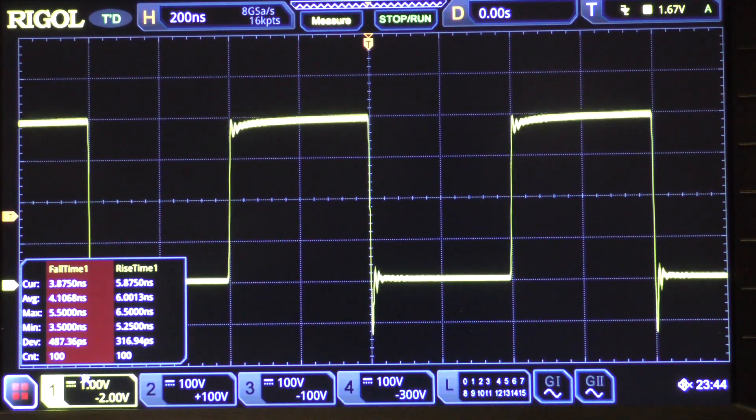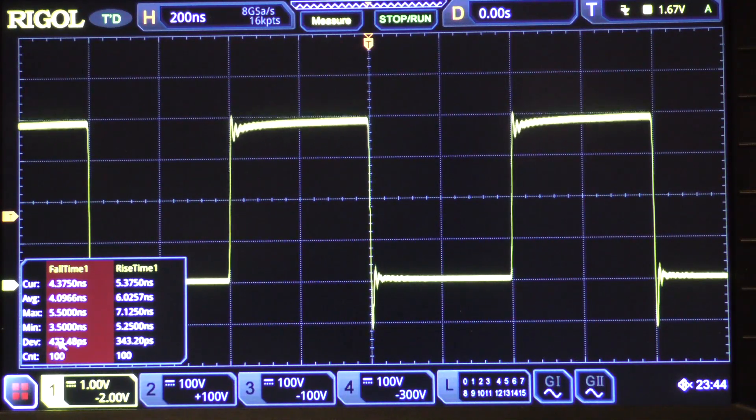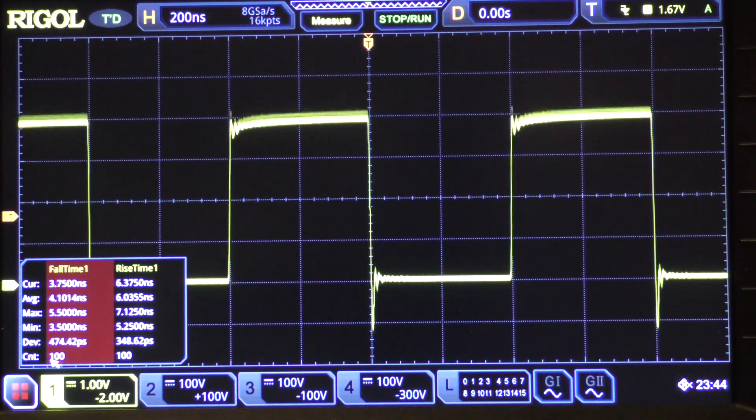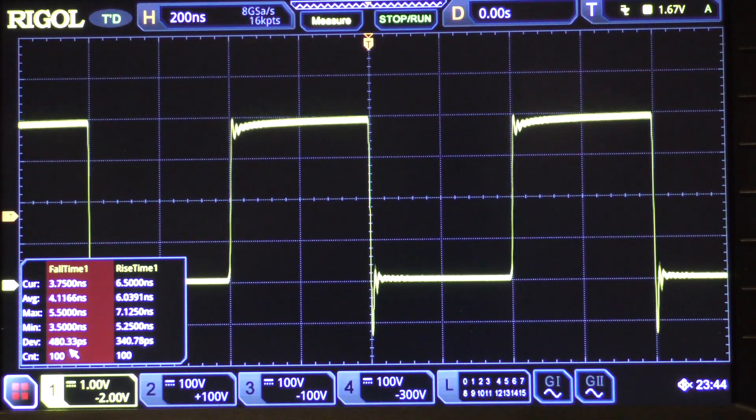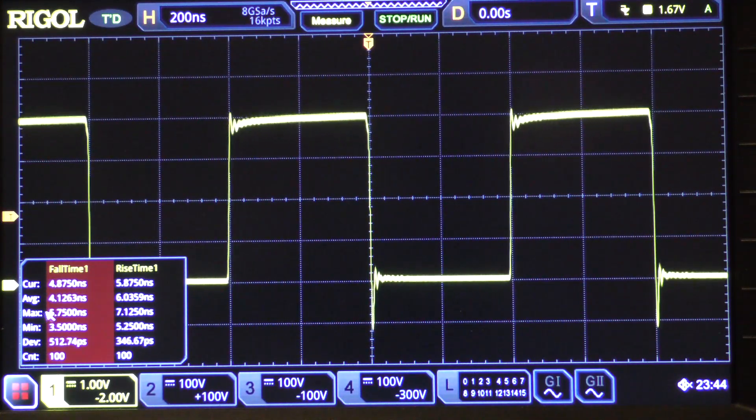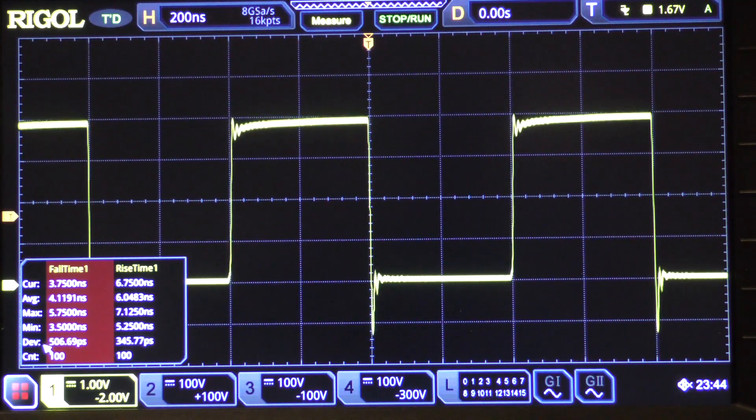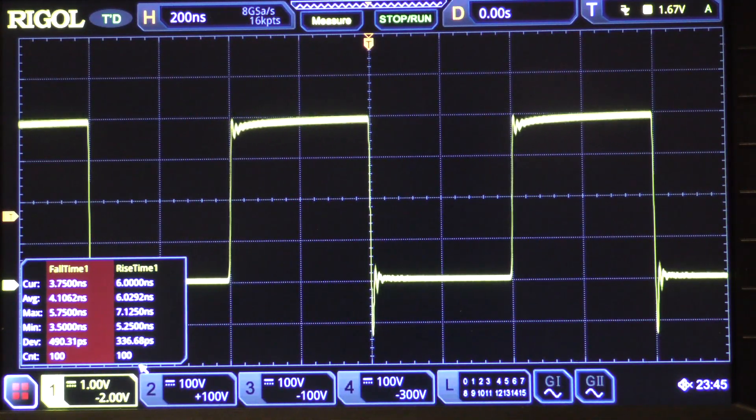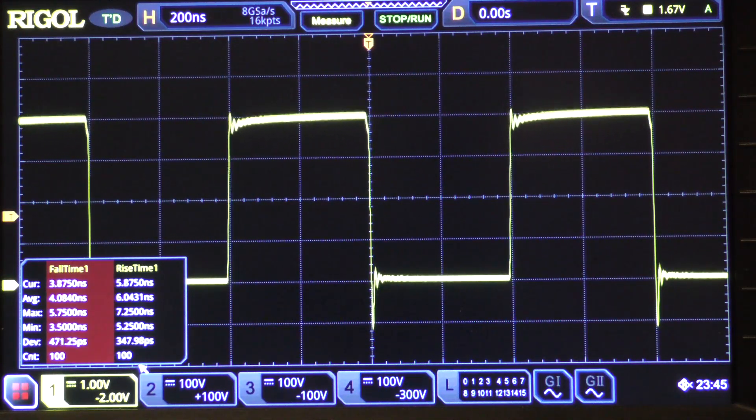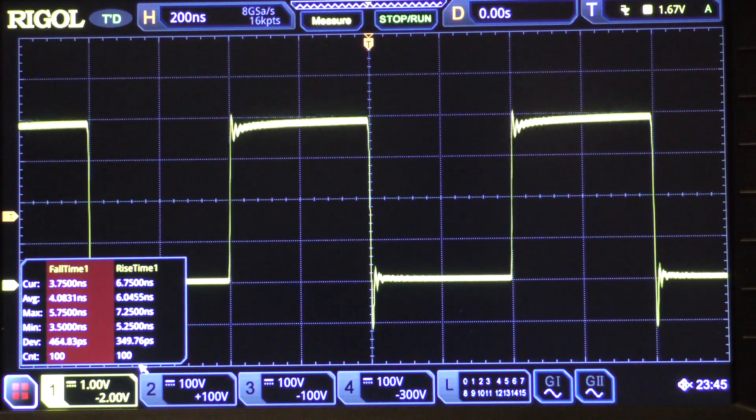You'll see that down here in the lower left hand corner it is collecting statistics and it has now collected 100 statistics. They're relatively close to the ones we collected with a thousand—470 or so picoseconds for the deviation on the fall time and 330 to 340 on the rise time. Notice that the top line is the current reading, the next is the average of all the samples, the following one is the maximum fall time and rise time, the minimum, then the standard deviation, and at the bottom is the number of counts.